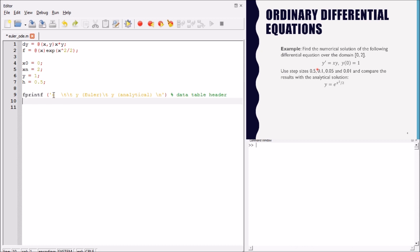Since we have a tabular representation of the solution, we define the header of the table. We have x on the left column, the Euler solution in the middle, and the analytical solution.